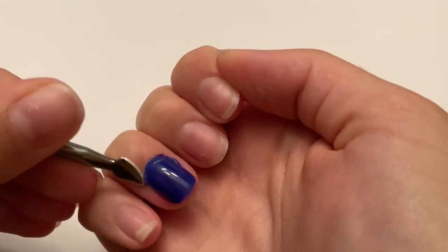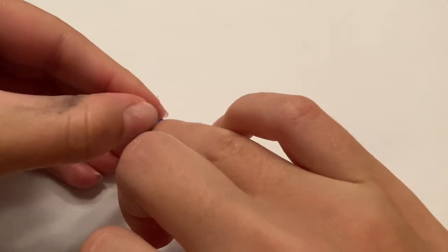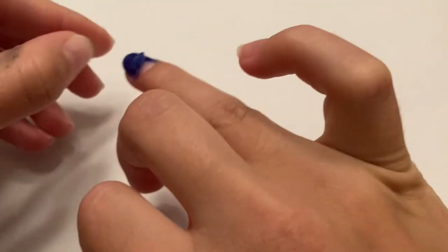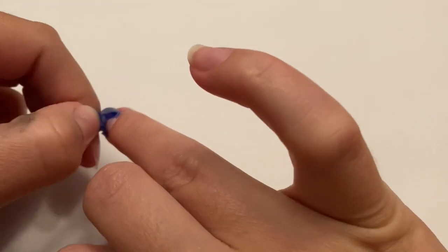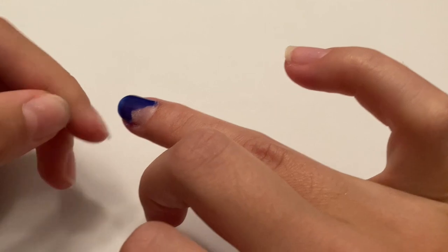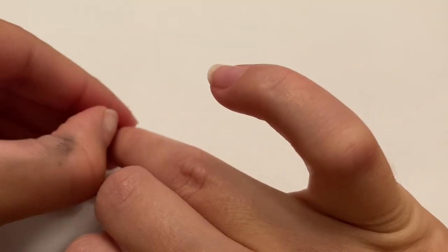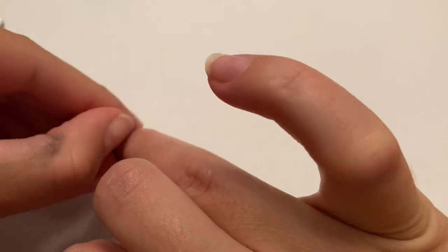Sometimes it will come off in one whole piece and sometimes it'll be a few pieces. In this case, it was three pieces, but it was still super easy. And like I said before, it'll only be this easy if you do not prep your nails at all. So this is a great method for any of you guys that like to peel off your nails right away or within one day.